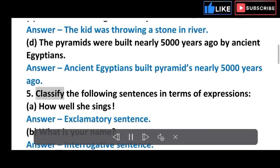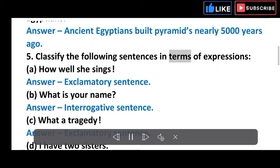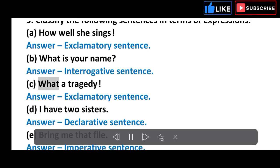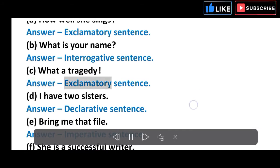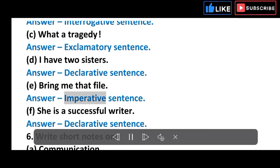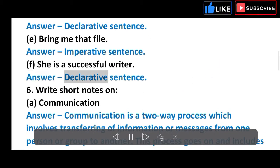Classify the following sentences in terms of expressions: (a) How well she sings! Answer: Exclamatory sentence. (b) What is your name? Answer: Interrogative sentence. (c) What a tragedy! Answer: Exclamatory sentence. (d) I have two sisters. Answer: Declarative sentence. (e) Bring me that file. Answer: Imperative sentence. (f) She is a successful writer. Answer: Declarative sentence.